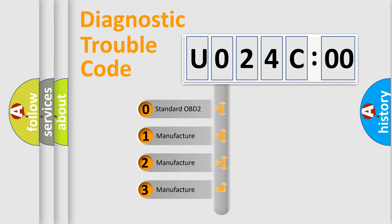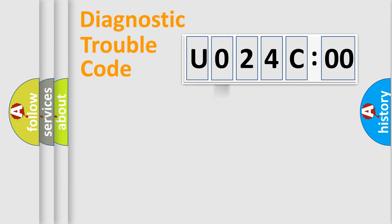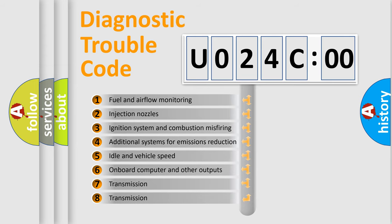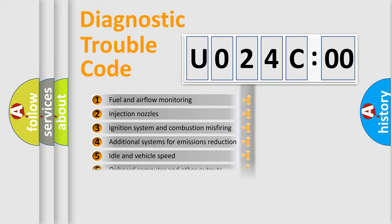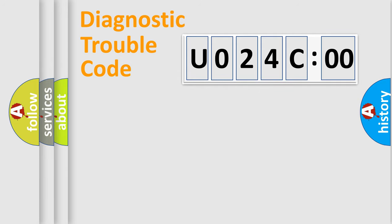If the second character is expressed as 0, it is a standardized error. In the case of numbers 1, 2, 3, it is a manufacturer-specific error. The third character specifies a subset of errors. The distribution shown is valid only for the standardized DTC code. Only the last two characters define the specific fault of the group.